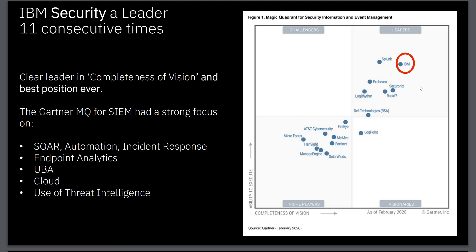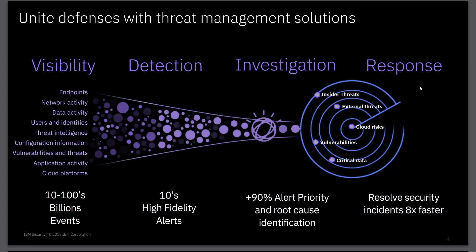QRadar is a fantastic SIEM solution for many organizations. Each SIEM solution has its own pros and cons, but QRadar is great because it comes with a lot of components already built in, which you can utilize for correlation and analysis needs — primarily SOAR for automation and incident response, endpoint analytics, user behavior analytics, cloud support, and threat intelligence. All of this is built into QRadar, supporting the key features of detection: visibility, detection, investigation, and response.